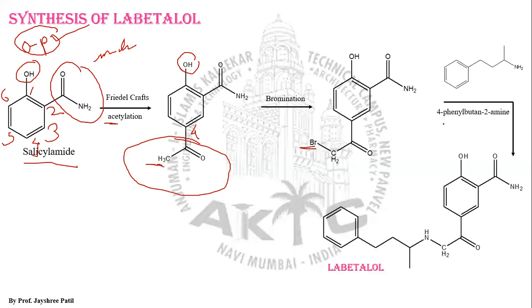Once the halogenated moiety is generated, it is treated with 4-phenylbutan-2-amine. In the butane chain, the first, second, third, and fourth carbons are numbered; an amino group is present at the second position and a phenyl group is present at the fourth position — hence the name 4-phenylbutan-2-amine.